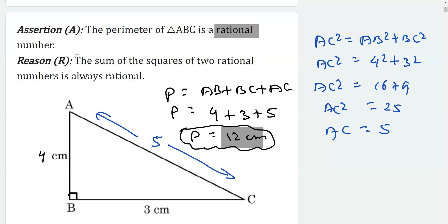When I read the reason, it says the sum of the squares of two rational numbers is always rational. Check here, we found the sum of the squares of two rational numbers: 4 is rational, 3 is rational, and if we add the sum of their squares we get 5, which is a rational number.